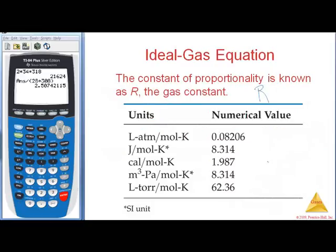The ideal gas constant is capital R. Depending on my units for pressure or volume, my R units change. The two you need to know for the AP exam — they're both on the sheet, but for multiple choice you won't have that sheet. Most gas law problems use R = 0.08206, and it's liters-atmospheres over mole·K.